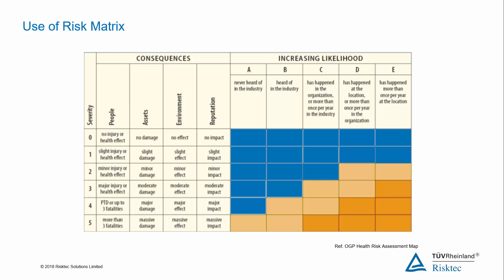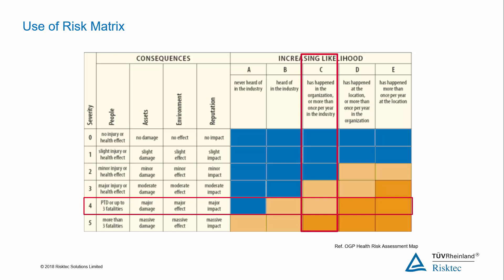First, let's consider electrocution, where the hazard is electricity. The risk score is arrived at by first asking: what is the worst credible consequence that may happen? In this example, a credible consequence would be a single fatality — a consequence level of 4 to people. And then by asking: what is the frequency of that credible consequence occurring or having already occurred? In this case, such an event has occurred within our company on a previous occasion — a probability of C. Therefore, the risk score for people is derived as 4C for the electrocution scenario.